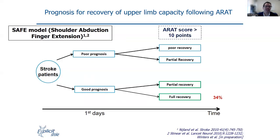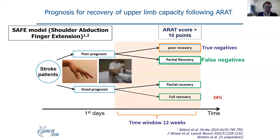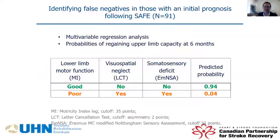Some people, despite the poor prognosis, did have some partial recovery — with an Action Research Arm Test score greater than 10 points. These people are known as false negatives — they were initially thought to be negative but actually did better. There were also some people who looked like they would fully recover but had only partial recovery. This raised the question: is there any other way of telling who is a true negative versus who is a false negative?